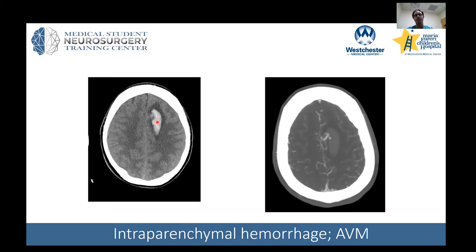To work this up further, a child with an intraparenchymal hemorrhage should have at least a CTA performed. CTA stands for CAT scan angiogram, which better shows the blood vessels using a contrast agent. Here we can see an enlarged vessel right next to the area of the bleed.